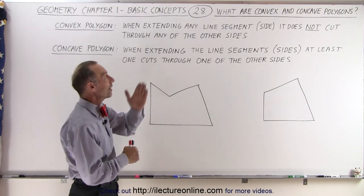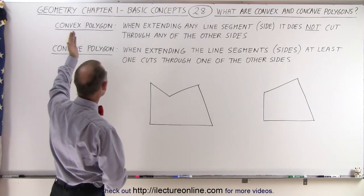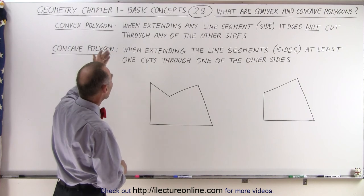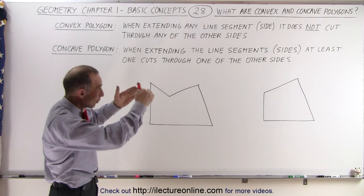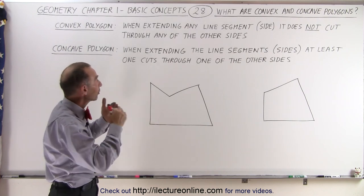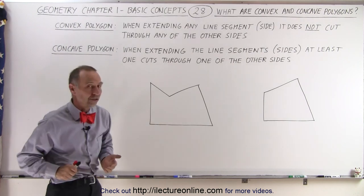Let's start with convex. The definition is that a convex polygon is a polygon such that when we extend any of the line segments, which means any one of the sides, it will not cut through any of the other sides.